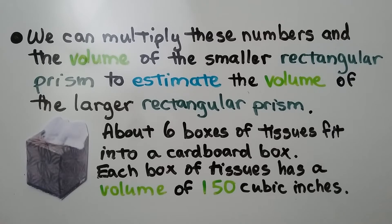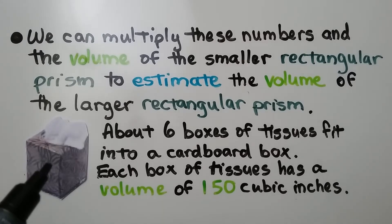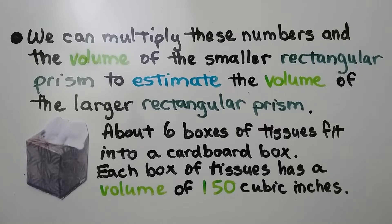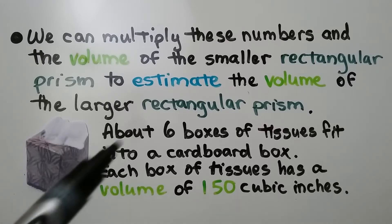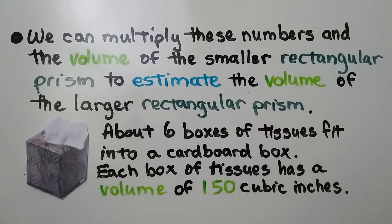We can multiply these numbers by the volume of the smaller rectangular prism to estimate the volume of a larger rectangular prism. So if we knew about six boxes of tissue fit into a cardboard box, and each box of tissues has a volume of 150 cubic inches, we would be able to use this information to find the volume of the cardboard box.